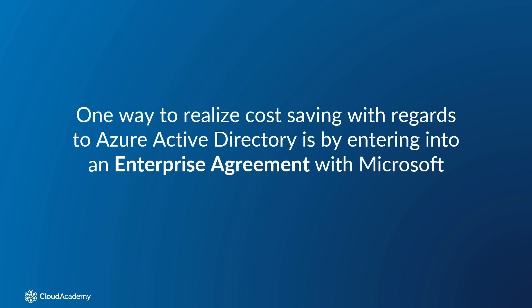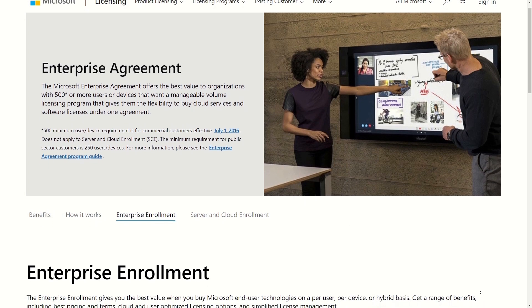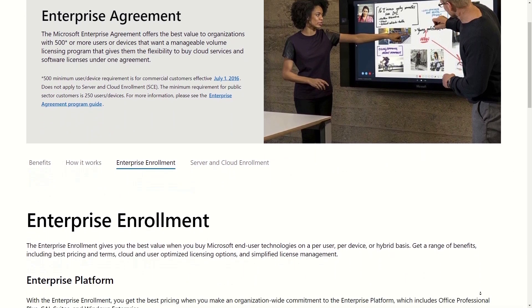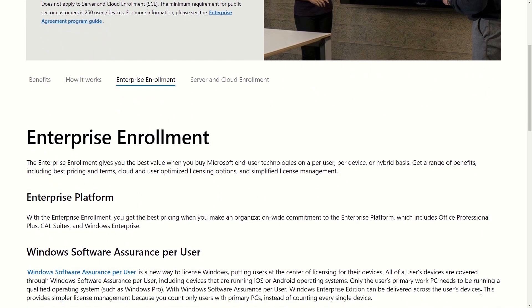One way to realize cost savings with regards to Azure Active Directory is by entering into an enterprise agreement with Microsoft, if your organization is not already doing so. In order to qualify for an enterprise agreement, your organization should have at least 500 devices and desire to license software and cloud services for a minimum of three years. You can always add or remove products and services over time through Microsoft's annual true-up process.